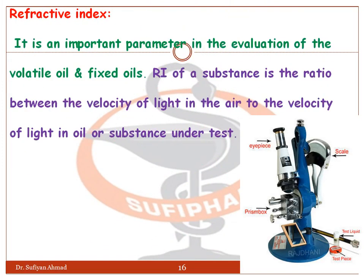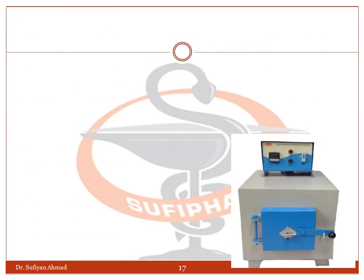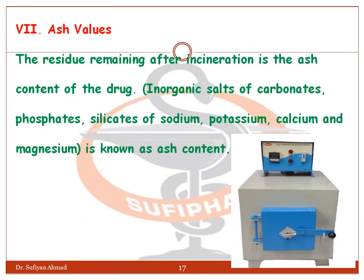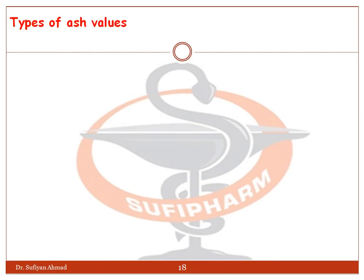Refractive index is generally detected using the Abbe refractometer. Ash value: the residue remaining after incineration is the ash content of the drug. Inorganic salts — carbonates, sulfates, phosphates, and silicates of sodium, potassium, calcium, and magnesium — are known as the ash content. The ash value is a criterion to judge the identity or purity of the crude drug; it can be calculated using a muffle furnace.